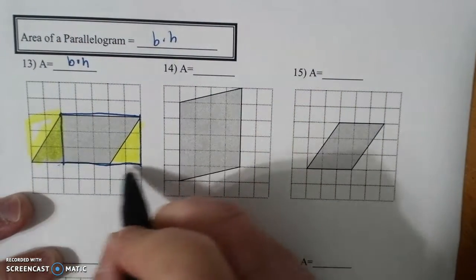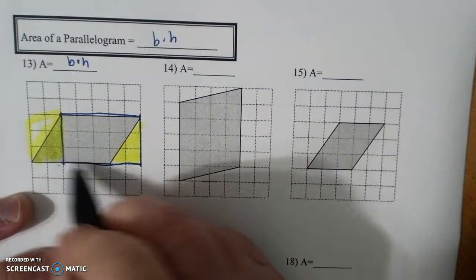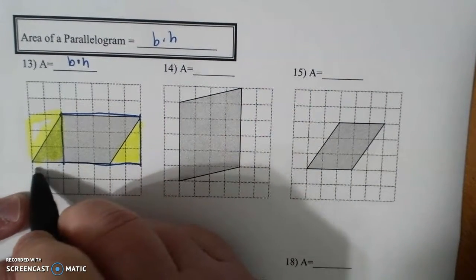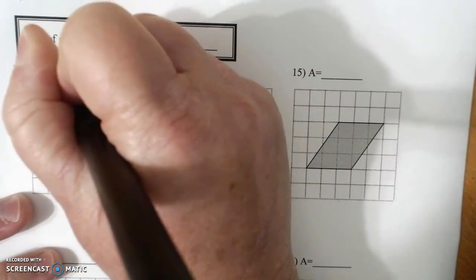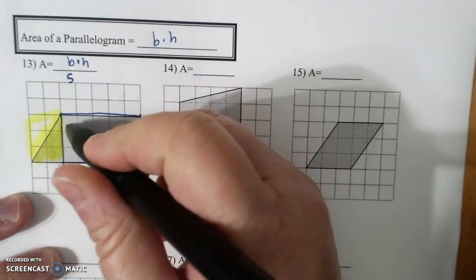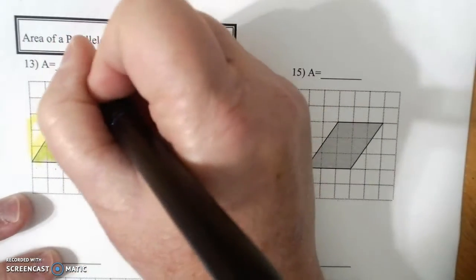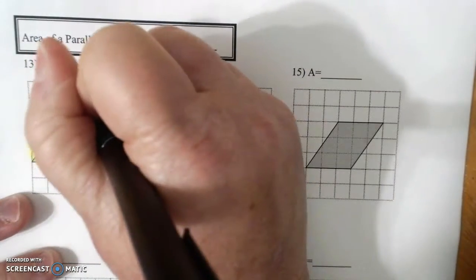And then your base is 1, 2, 3, 4, 5. And your height is 1, 2, 3. And so it's 15 units squared.